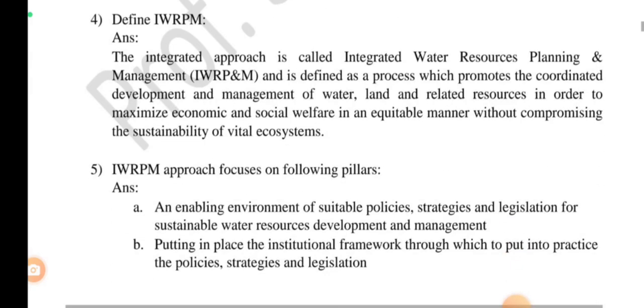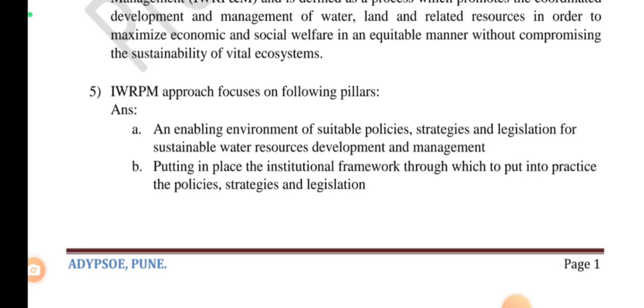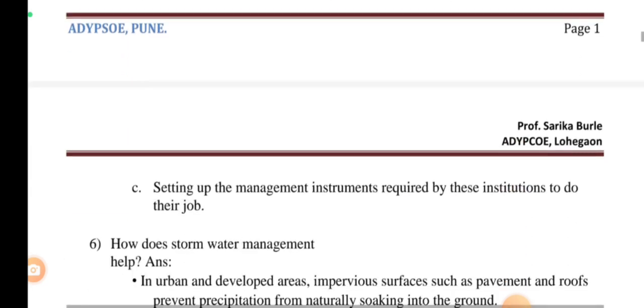Next, what are the approaches of IWRPM? The first approach is environmental suitable policies — such as strategies and legislation — used for sustainable water resources planning, development, and management. The second approach is putting these policies into an institutional framework. The third approach is setting up the management framework.